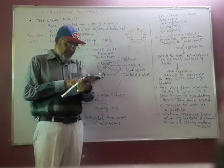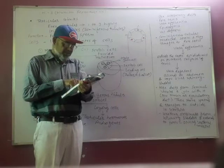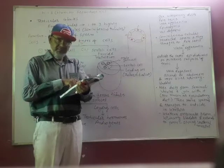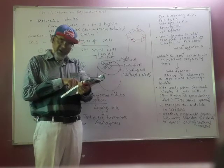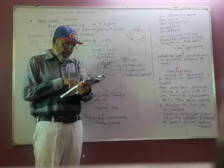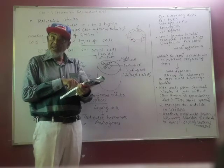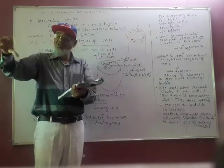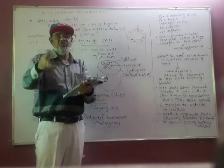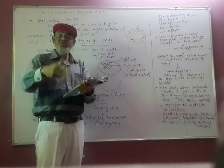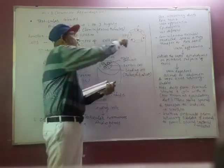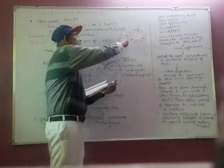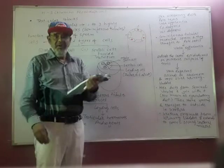So the seminiferous tubules are lined by two types of cells: one — the male germ cells, spermatogonia, and the second — Sertoli cells. The male germ cells undergo meiotic division and finally lead into sperm formation. While the Sertoli cells provide nutrition to the developing spermatogonia. These are the Sertoli cells — they provide nutrition to the sperm.